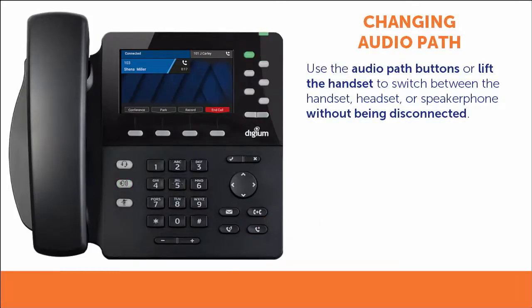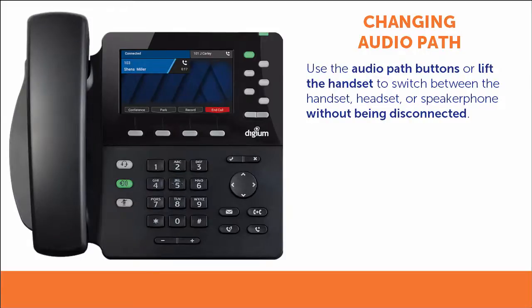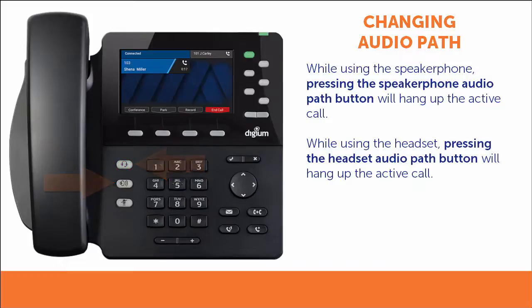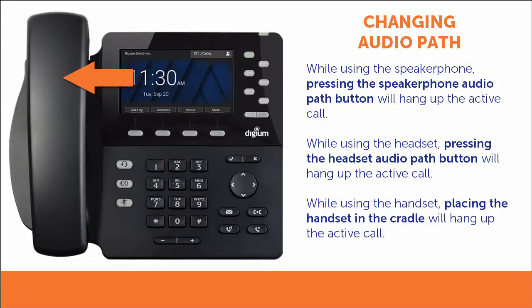While a call is active, you can switch between the handset, headset, or speakerphone and your call will remain connected by using the audio path buttons or by lifting the handset. If you are on the speakerphone or using the headset, pressing the audio path button that matches your current path will hang up the active call. Likewise, if the handset is in use for a call, placing it in the cradle will end the call.